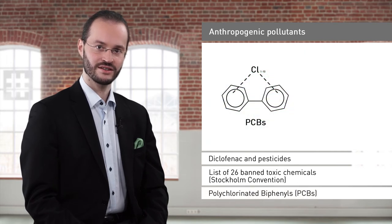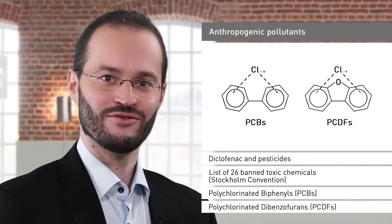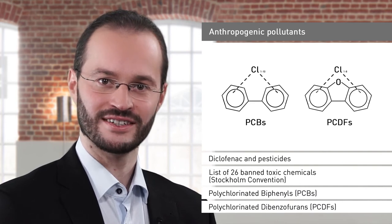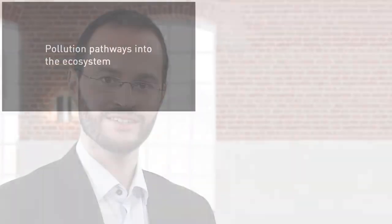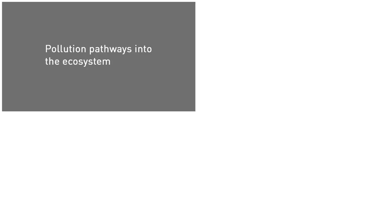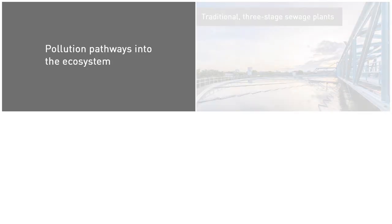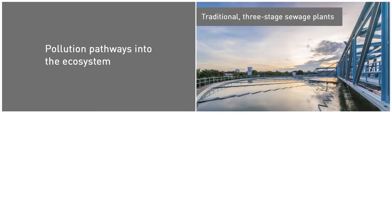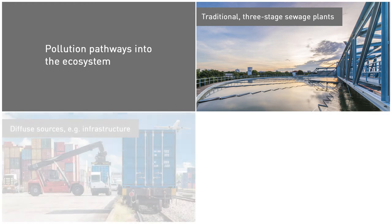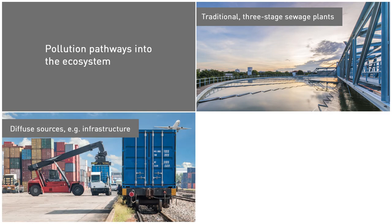Among these are polychlorinated biphenyls, PCBs, and polychlorinated dibenzofurans, PCDFs. Pollutants find their way into the ecosystem via diverse routes. One pathway is through traditional three-stage sewage plants that are unable to remove all contaminants from municipal, industrial or hospital wastewater. Another pathway are diffuse sources of pollution, including agriculture and infrastructure, as well as precipitation.